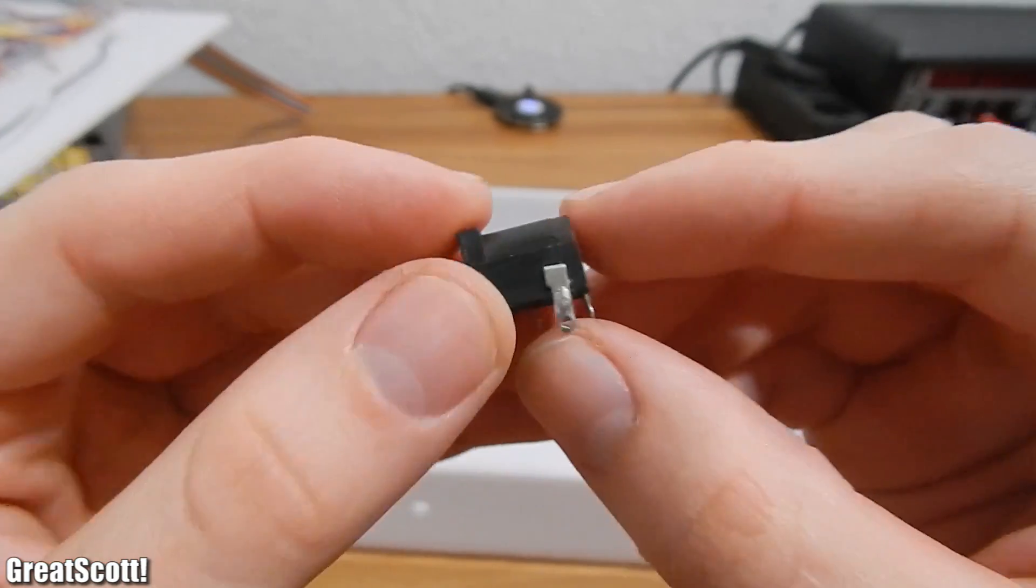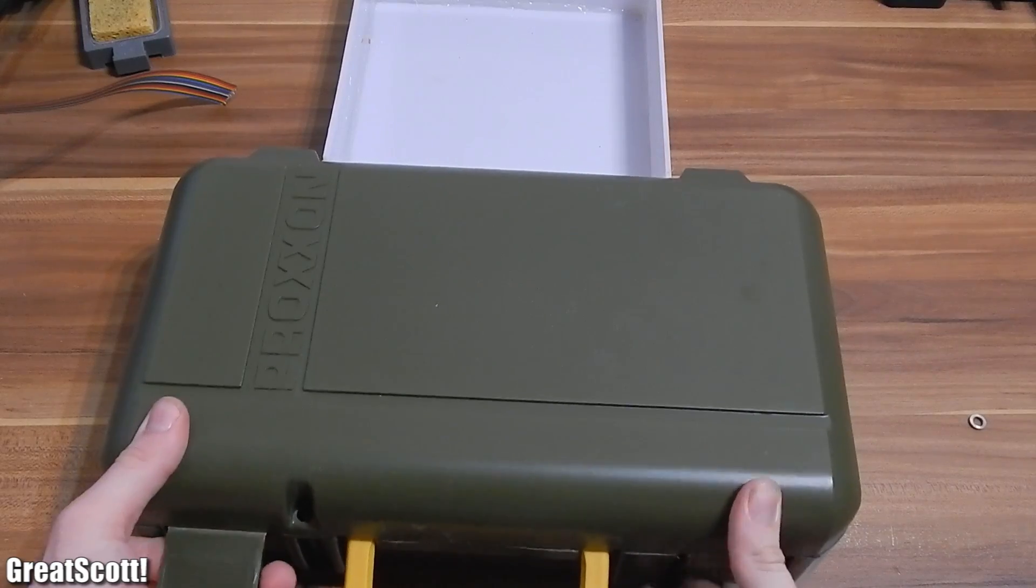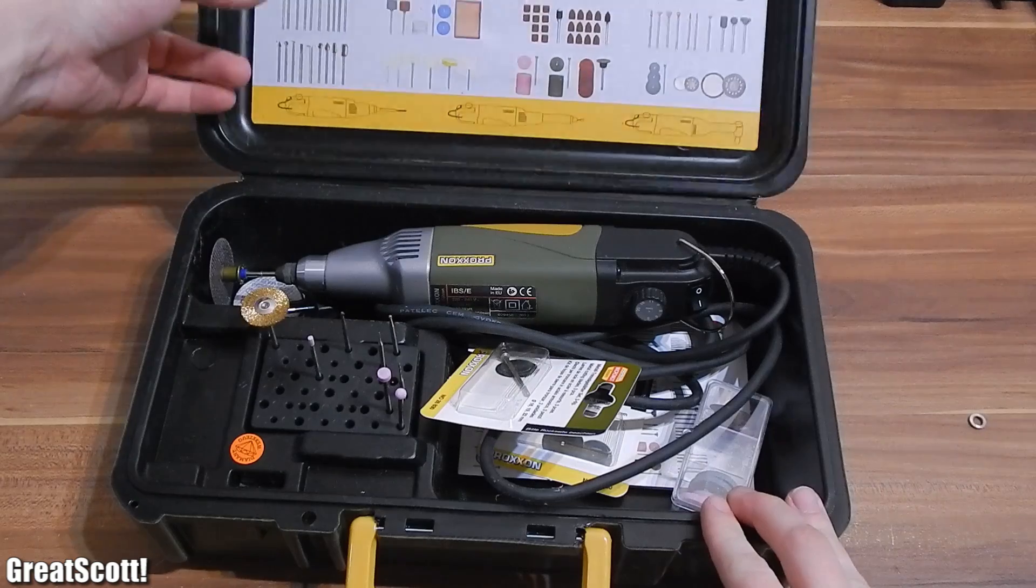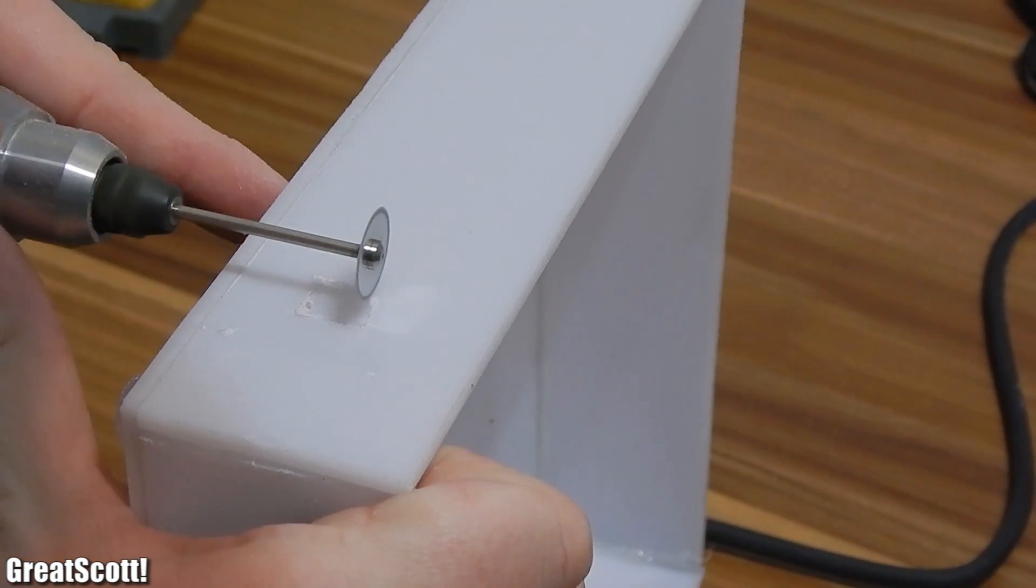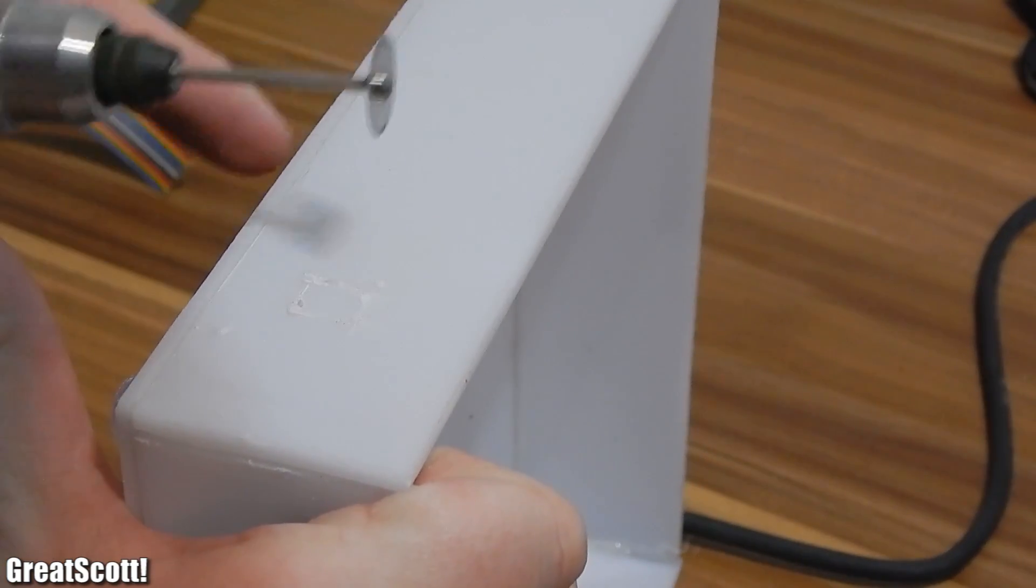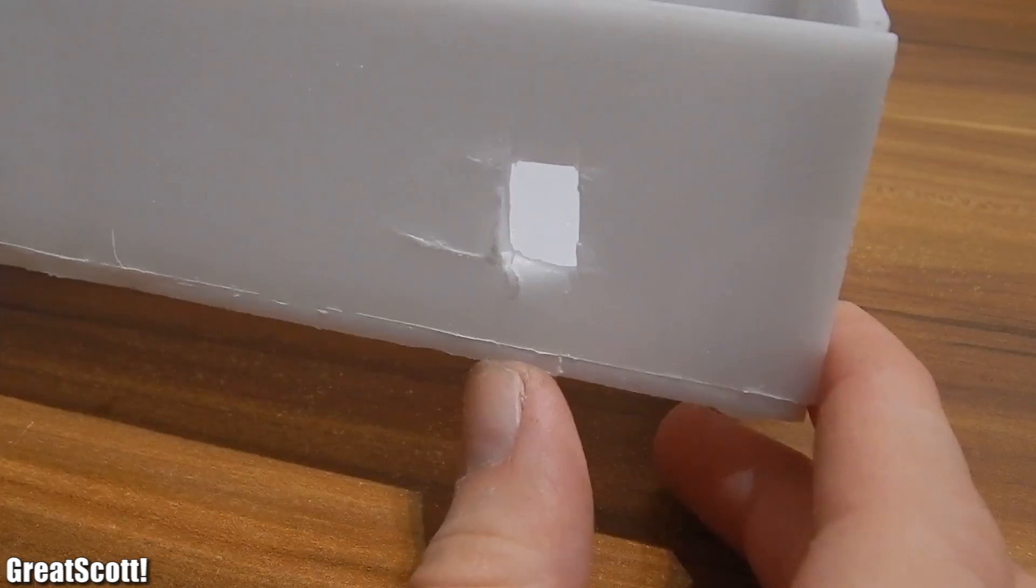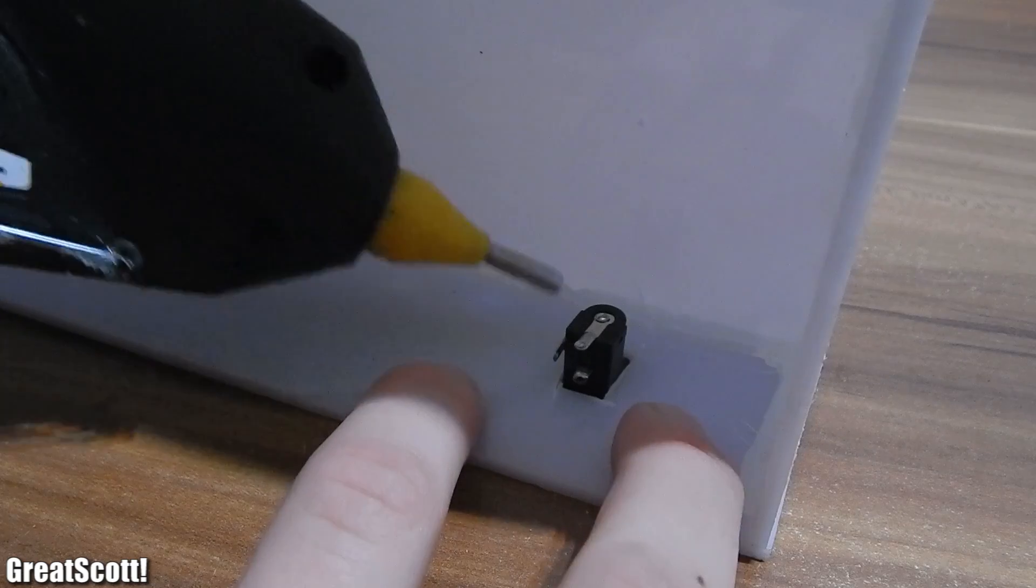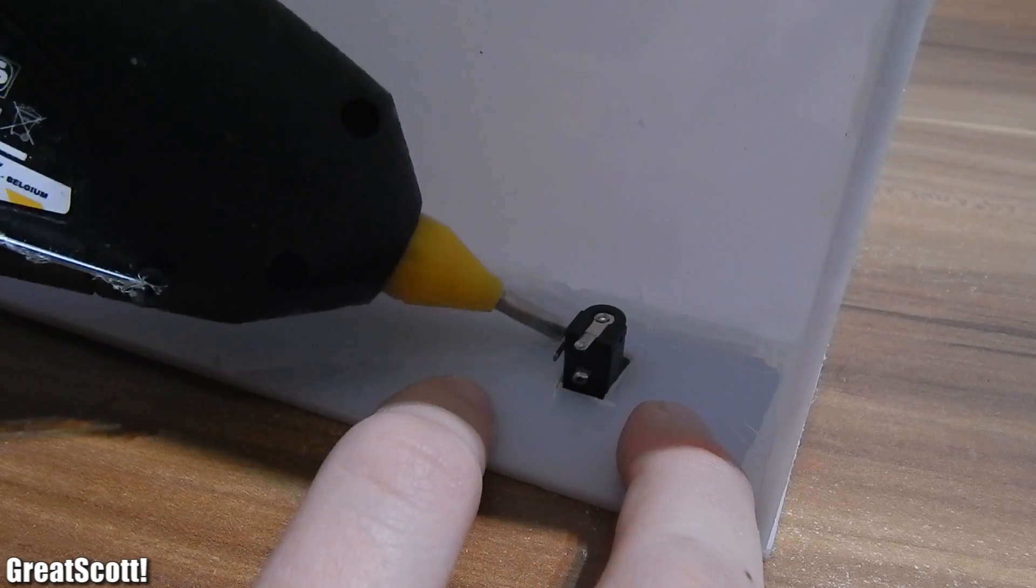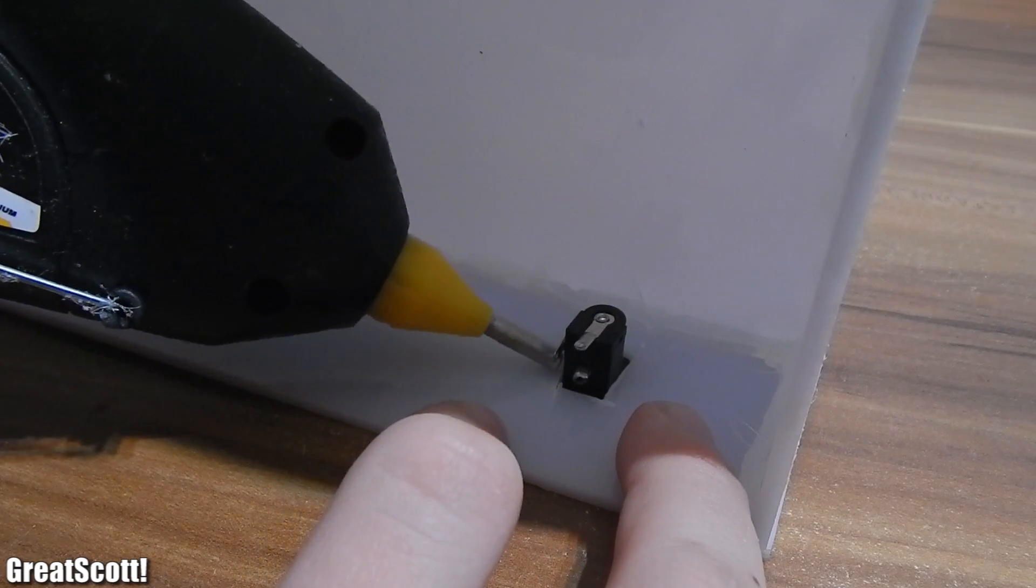My case is still missing a DC jack, so I just use my Dremel with a cutting tool to create a square for my jack. If you're familiar with some of my other videos, then you know I'm not that skilled in this category. So I guess this should work somehow? But I still use hot glue to secure it, so it'll work. I hope.